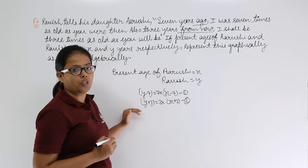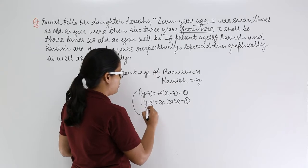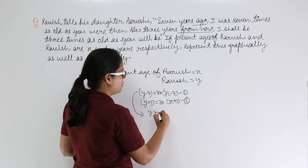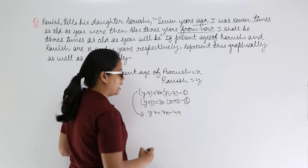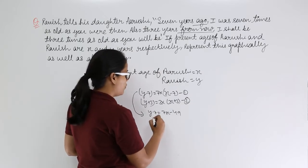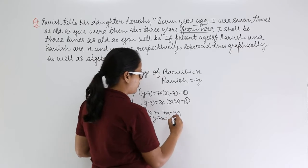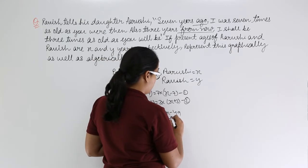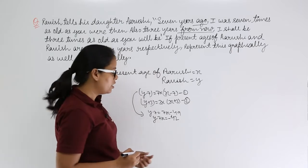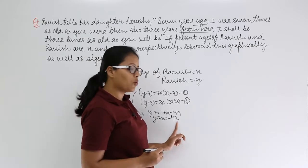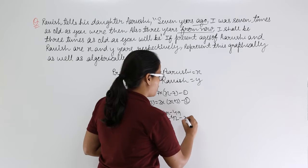Now let's solve these two equations. For equation one: y minus seven equals seven times (x minus seven), which gives y minus seven equals seven x minus forty-nine. Solving this, we get y minus seven x equals minus forty-two. We can call this equation three.